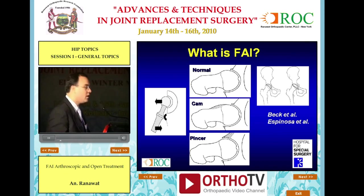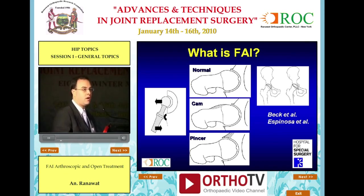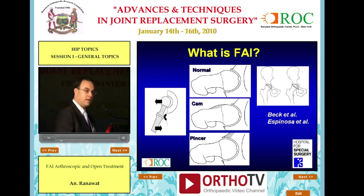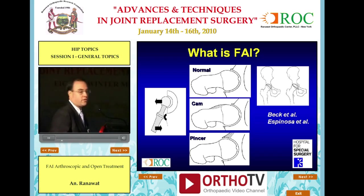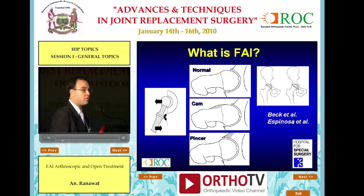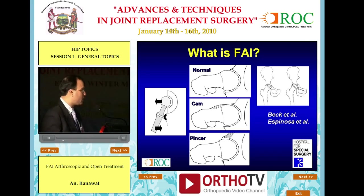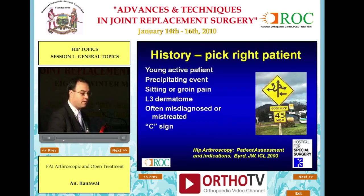But what is FAI? We know impingement. We know head-neck ratio. I have had countless arguments with my father about impingement over the years, but he understands impingement, and everyone understands impingement. It has relevance in both the native hip, the total hip, and certainly in the resurfaced hip. There are two broad types: there's a CAM lesion, which is on the femur, and there's a pincer lesion, which is on the acetabulum.